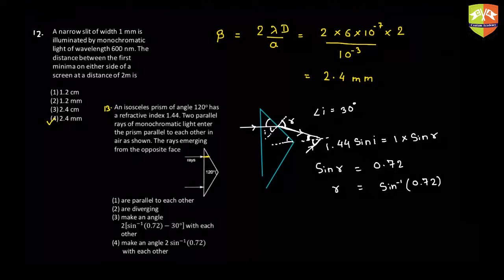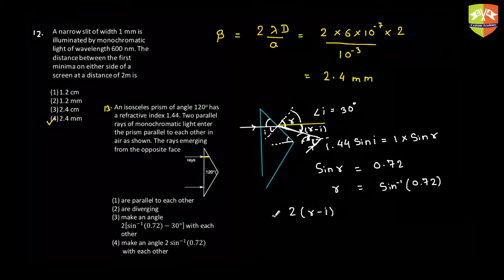The angle between the two refracted rays is 2(r − i) = 2(sin⁻¹(0.72) − 30°). So option 3 is correct. Any doubts on this question — type yes or no quickly, and we'll move to the next one.